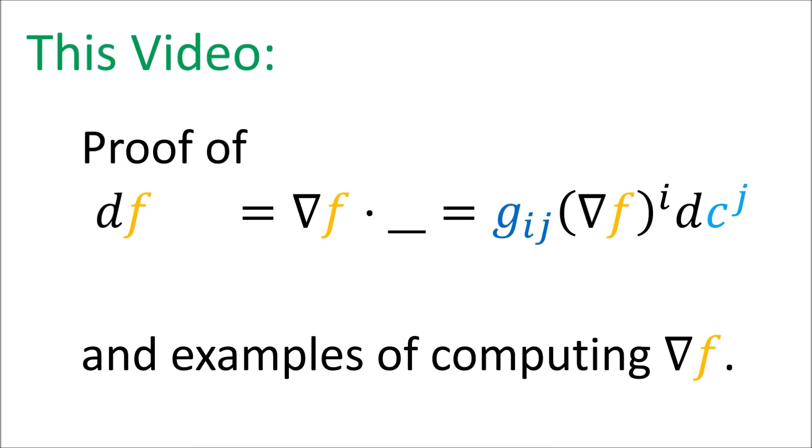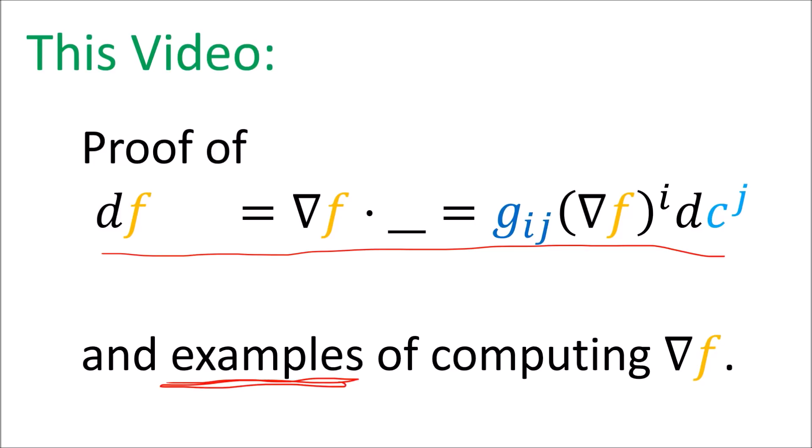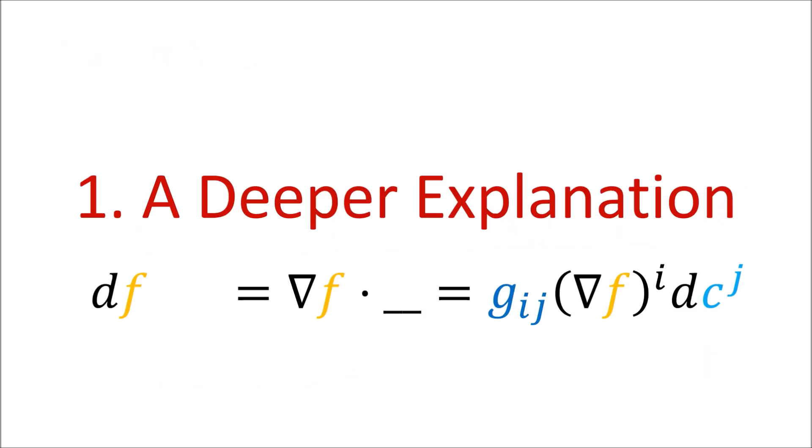In this video I'd like to cover two things: a more formal derivation of the formula for the components of df using the tensor product — if you aren't familiar with the tensor product I have links in the description — and second, some examples of computing del f in different coordinate systems. So first I'm going to give a deeper explanation of this formula.